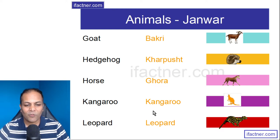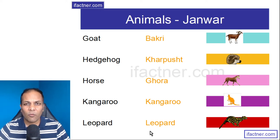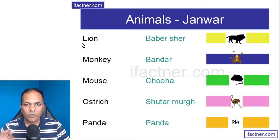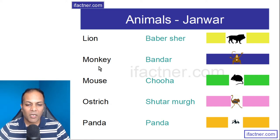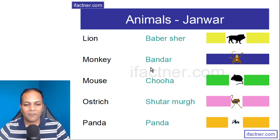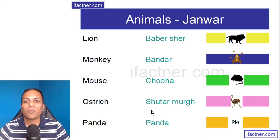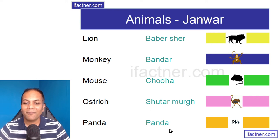Kangaroo is Kangaroo. Leopard is Leopard, or we can call it Tendwaa. Lion is Babarsher. Monkey is Bander. Mouse is Chuha. Ostrich is Shutramurgh. Panda is Panda.